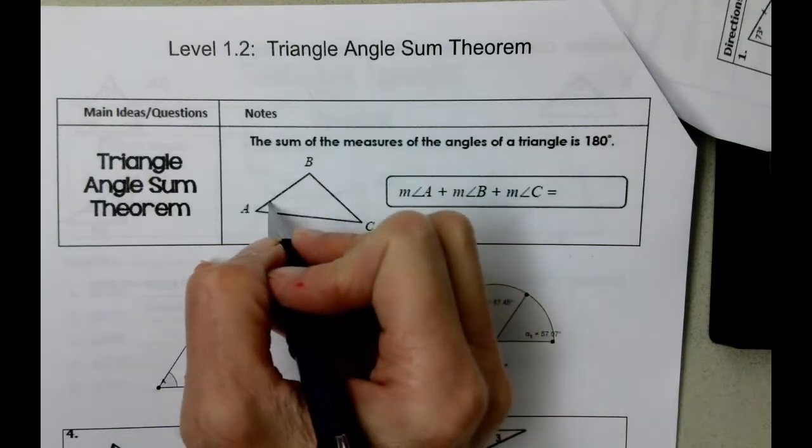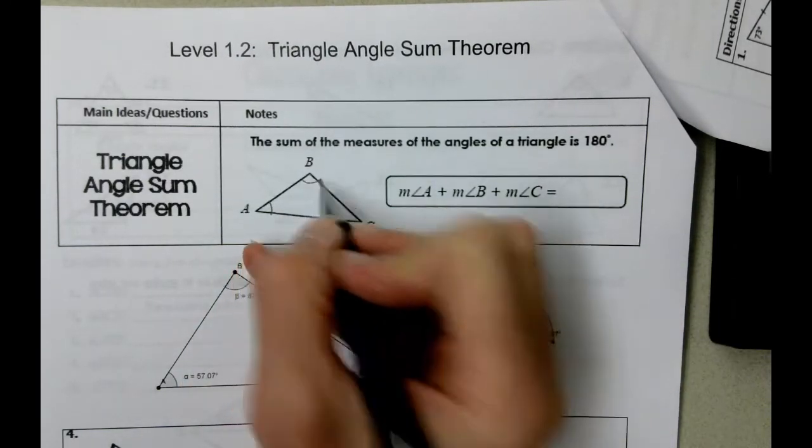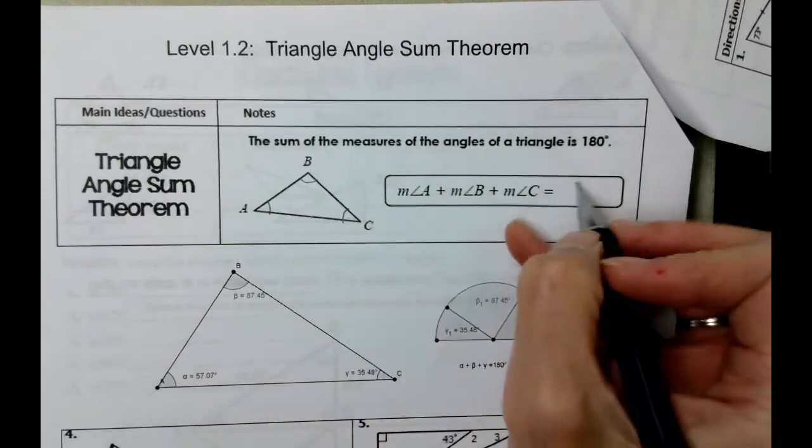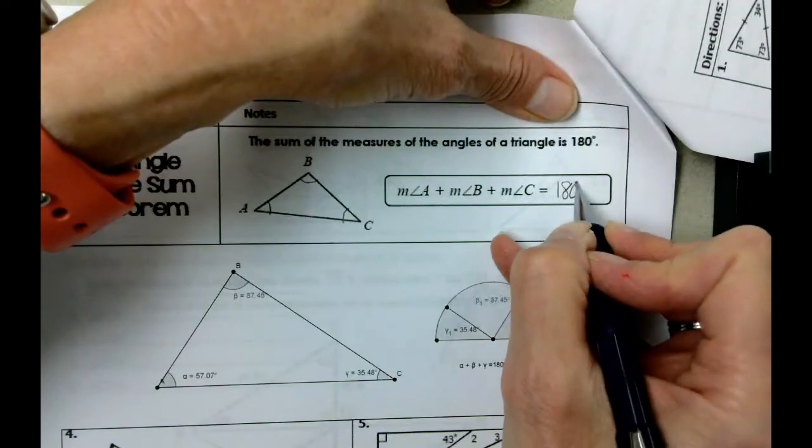The sum of the measures of the angles of a triangle is 180 degrees. So what we can say is that the measure of angle A, plus the measure of angle B, plus the measure of angle C, is 180 degrees.